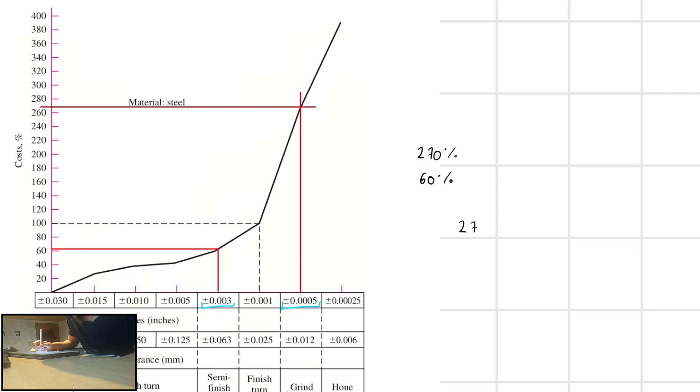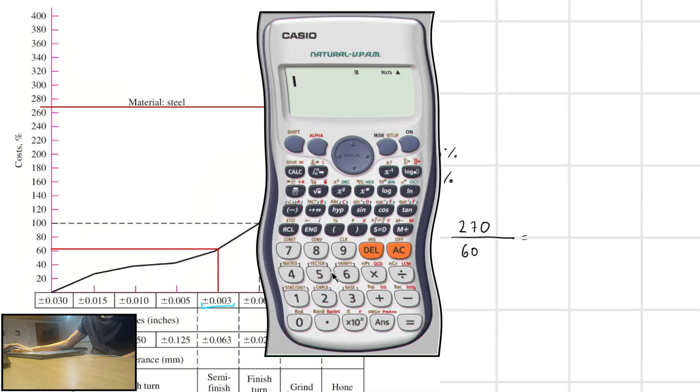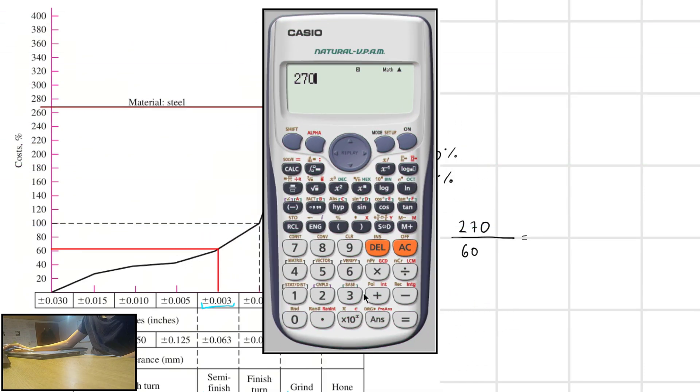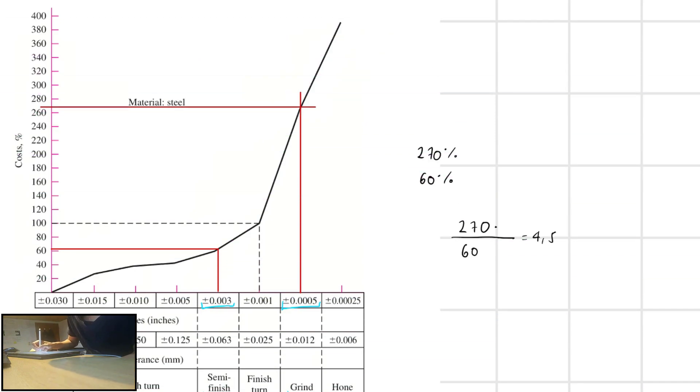So that means that is equal to 270 divided by 60. And this is equal to 270 divided by 60 is equal to 4.5, because we are talking about a percentage.